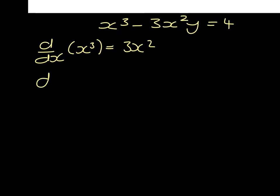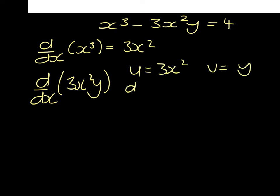If we differentiate 3x squared y, we have a product. So if we let u equal 3x squared and we let v equal y, when we differentiate u, we're going to get 6x. And when we differentiate y, we're going to get dy dx.